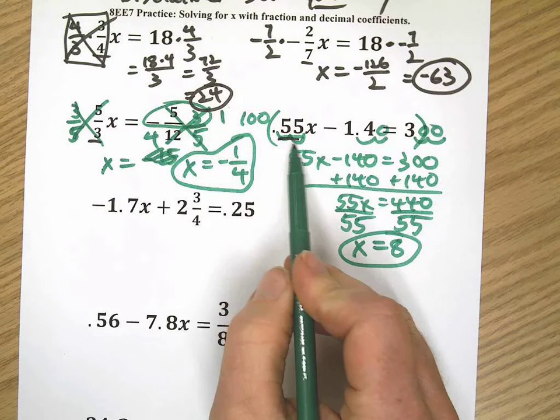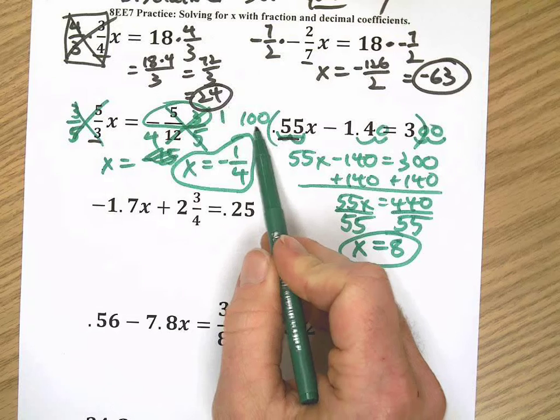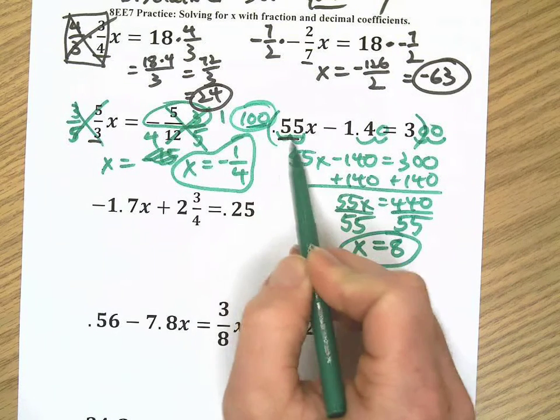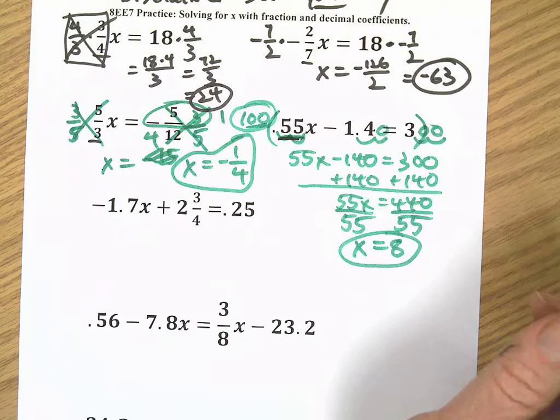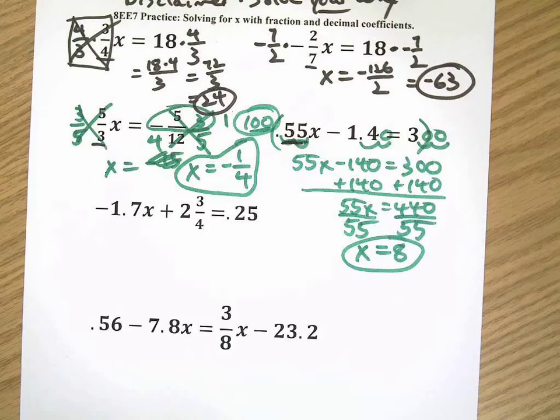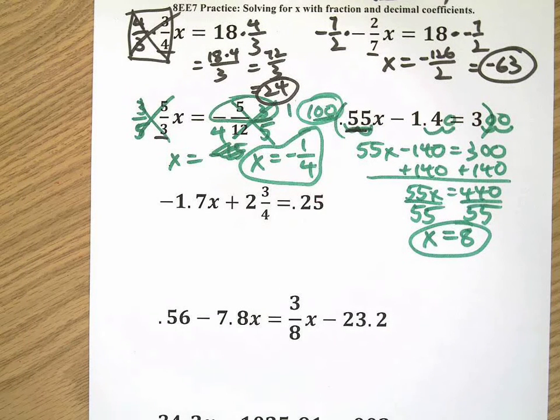So one technique you can use when dealing exclusively with decimals is multiply by the whole number that has the same number of zeros in it as the greatest number of decimal places in your equation. Try saying that ten times really quickly. Here we go with the next one.